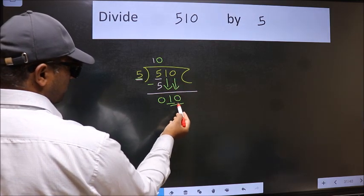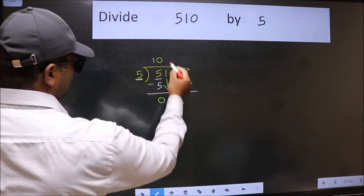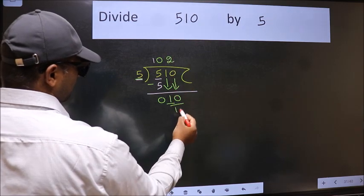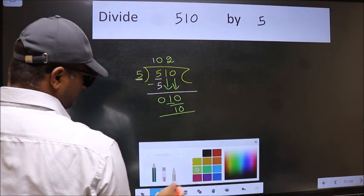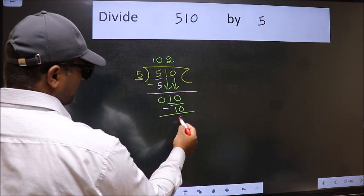Now 10. When do we get 10 in 5 table? 5 times 2 is 10. Now we should subtract. We get 0.